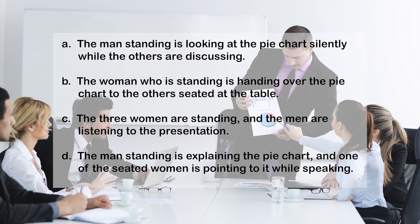A: The man standing is looking at the pie chart silently while the others are discussing. B: The woman who is standing is handing over the pie chart to the others seated at the table. C: The three women are standing and the men are listening to the presentation. D: The man standing is explaining the pie chart and one of the seated women is pointing to it while speaking. Answer: D.